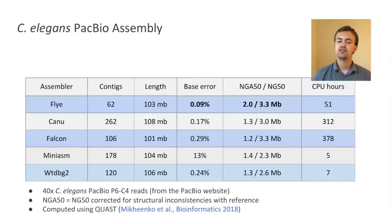And so here's an example of C. elegans assembly from PacBio reads. And as you can see, all assemblers resulted in somewhat similar contiguity. Flye was a little bit better, but for this genome, we expect all assemblers to do well because it's not very complex. And as you can see here, Flye was also pretty fast, but miniasm and WTDBG2 were the fastest.